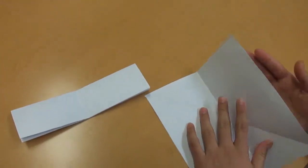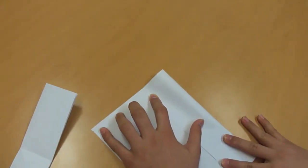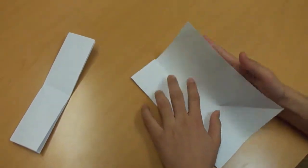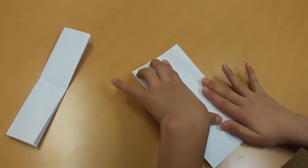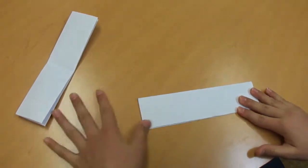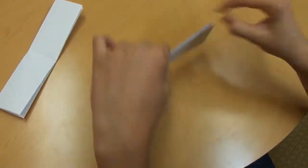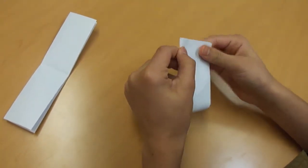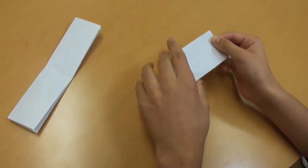Same thing with the other side. You fold the paper. You fold it again in halves. Then you open it.